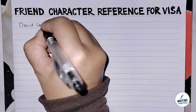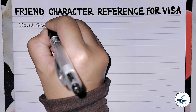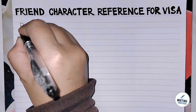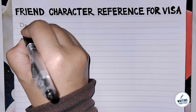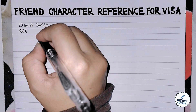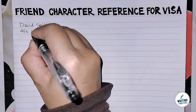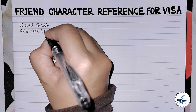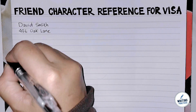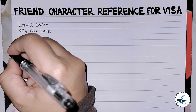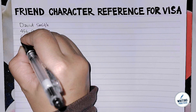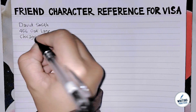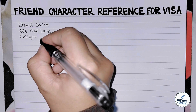This type of letter serves to vouch for the applicant's personal character, trustworthiness, and suitability for international travel. It typically includes details about the relationship between the writer and the applicant, as well as specific examples of the applicant's positive qualities such as responsibility, integrity, and respect for laws. The purpose of this letter is to provide additional evidence that the applicant will comply with the visa's terms and is a trustworthy candidate for travel to the destination country.